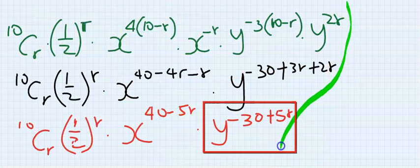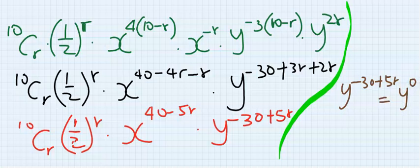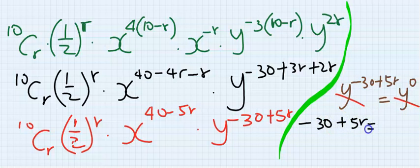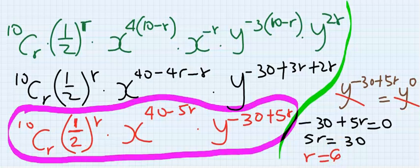The question says term independent of y, so I will focus only on the y part. Setting y to the power of minus 30 plus 5r equal to y to the power of 0, we get minus 30 plus 5r equals 0, so 5r equals 30, and therefore r equals 6.